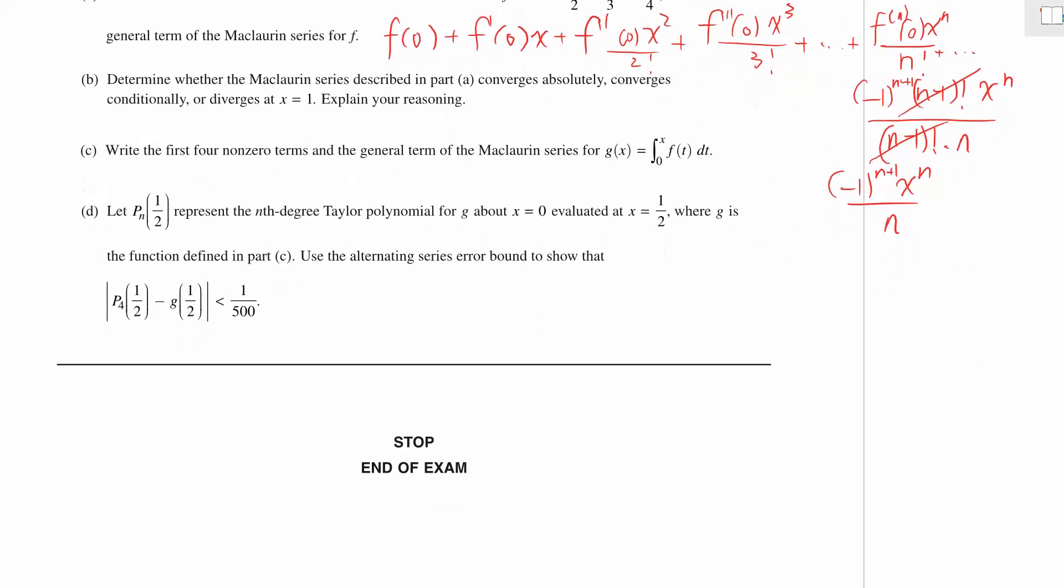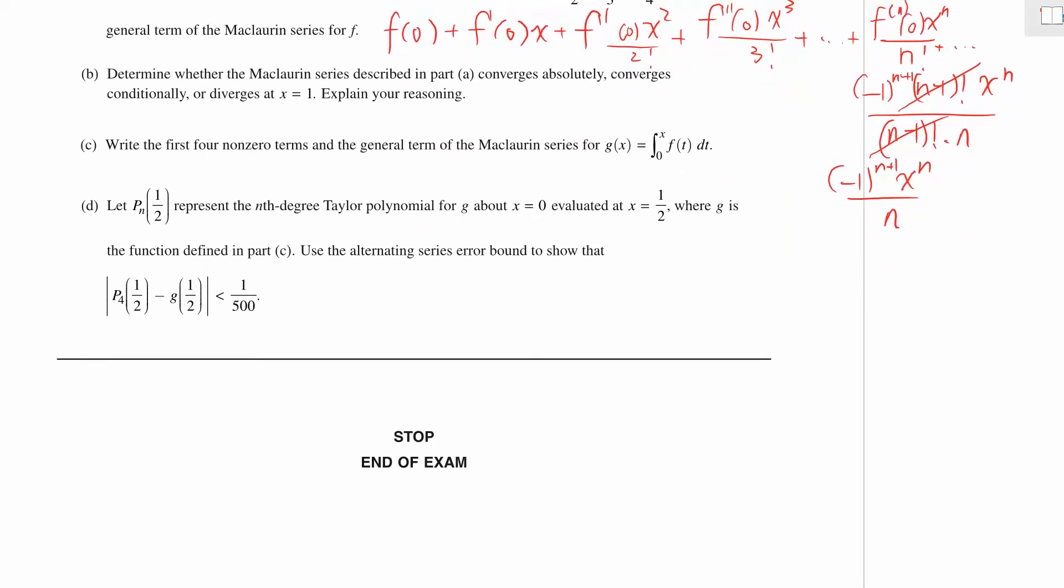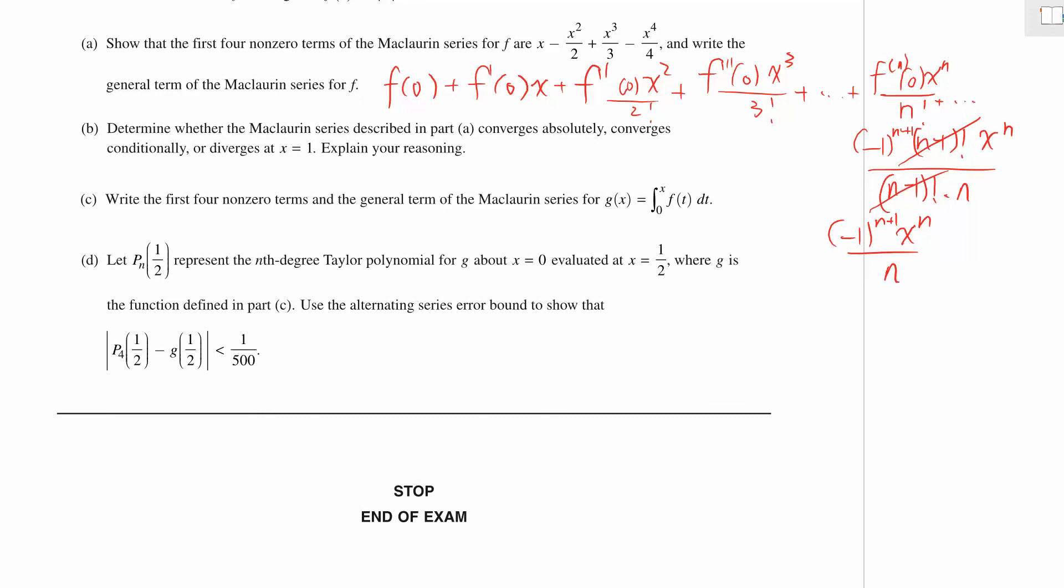Now let's get to part b: determine whether the Maclaurin series described in part a converges absolutely, converges conditionally, or diverges. The first thing is to remember what are the differences between the three. We have to first find the series at x equals 1, which is the sum from n=1 to infinity. If we plug in x=1 here, we have 1^n always equals 1, so it's (-1)^(n+1) over n.